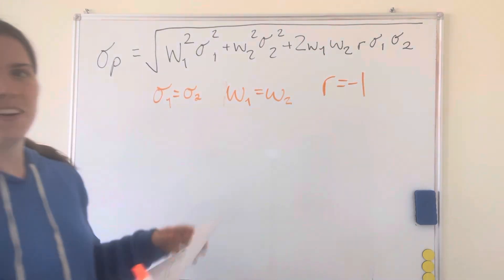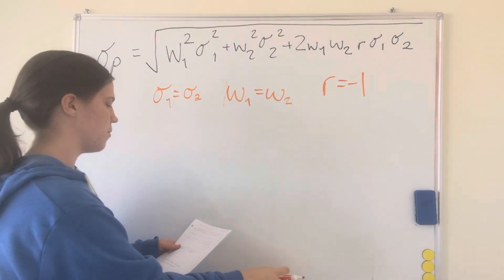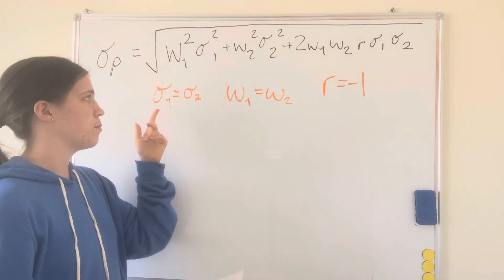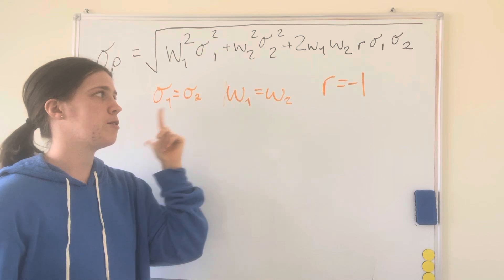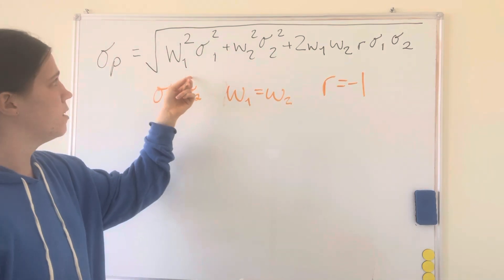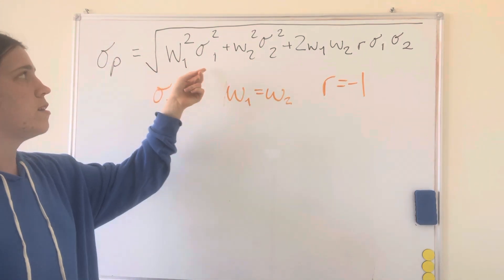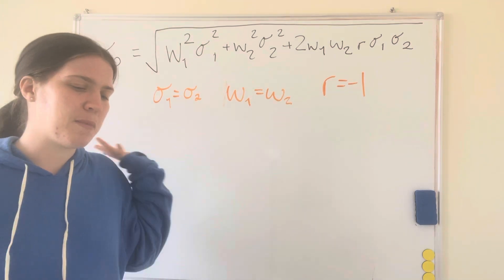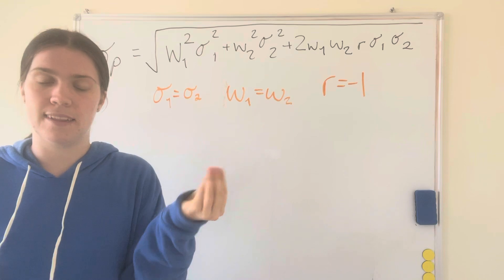And so what are we going to do with this formula? First, the first thing we can do is since we know that sigma 1 equals sigma 2 and w1 equals w2, we can replace the w1s and the sigma 1s or 2s. You can replace either one and we can make them all the same so then we can start combining them.